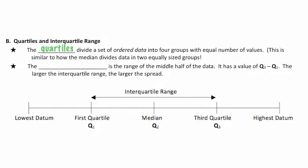Quartiles divide a set of ordered data into four groups with an equal number of values. It's similar to how the median divides data into two groups — those that are above the median and those that are below the median — except quartiles divide data into four groups.